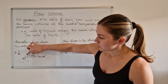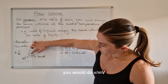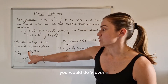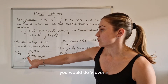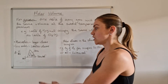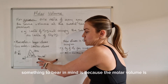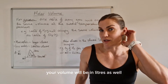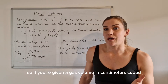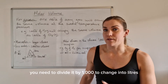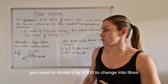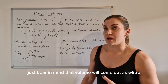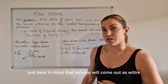If you're trying to work out the number of moles, you do V over MV, and if you're trying to work out the molar volume, you do V over N. Bear in mind that because the molar volume is in litres per mole, your volume will also be in litres. So if you're given a gas volume in centimetres cubed, you need to divide it by 1000 to change it into litres. If you're calculating a volume, it will come out as litres.